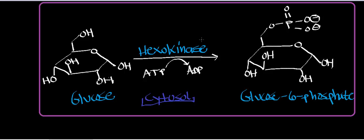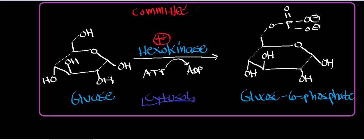In the last video we looked at how glucose gets into the cell. As soon as glucose enters the cell, within nanoseconds it's going to get phosphorylated by a very important enzyme in glycolysis called hexokinase. Hexokinase is important for several reasons. Number one, it is one of the committed steps in glucose metabolism.